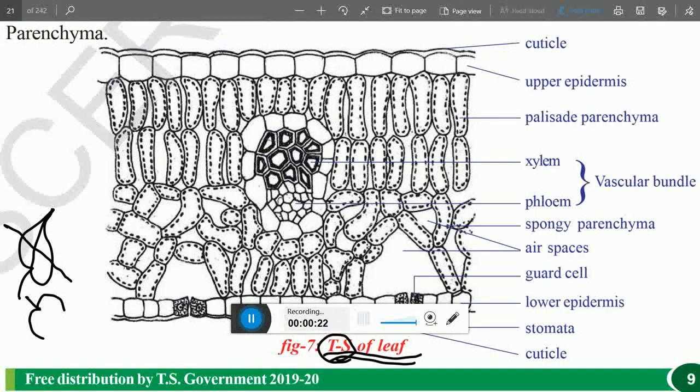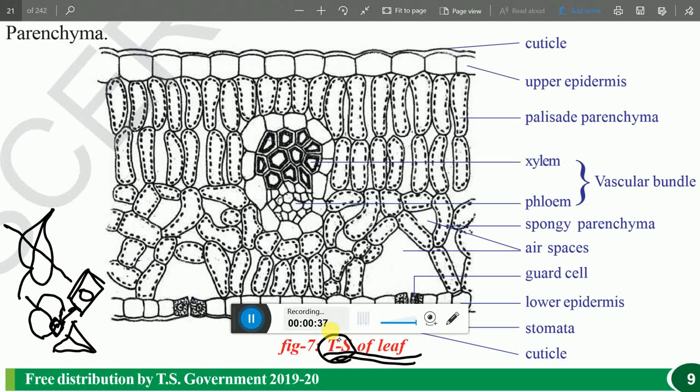If we just isolate one portion and make a slide with the help of a slide and a cover slip and focus under microscope, then we will observe the structure. That is called as transverse section of leaf.